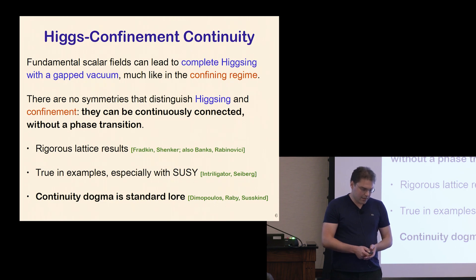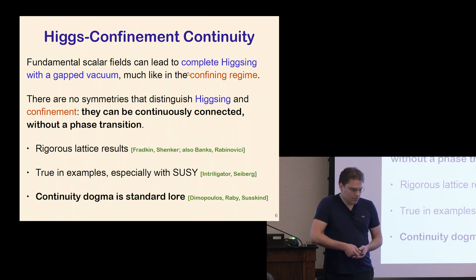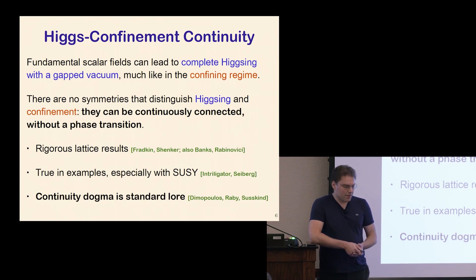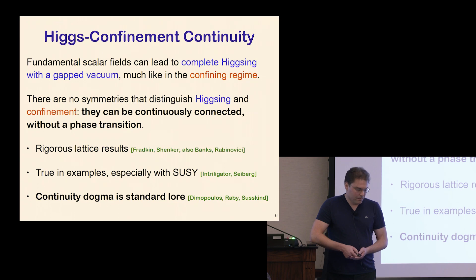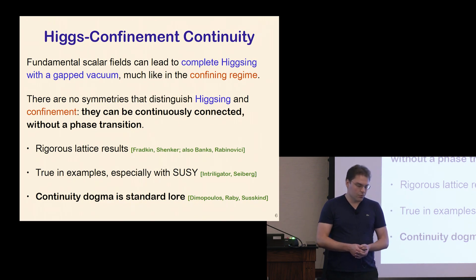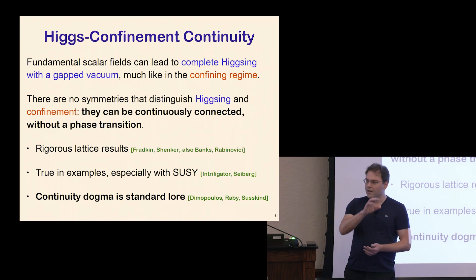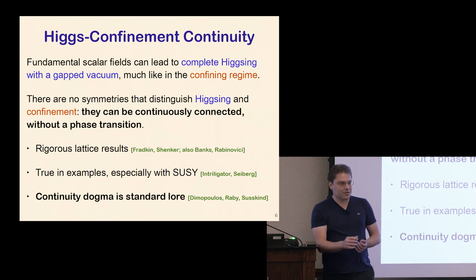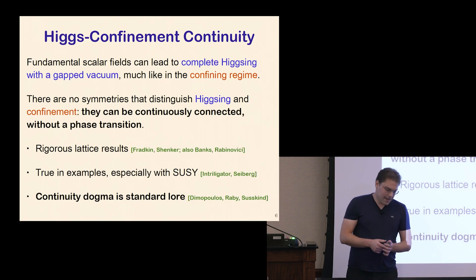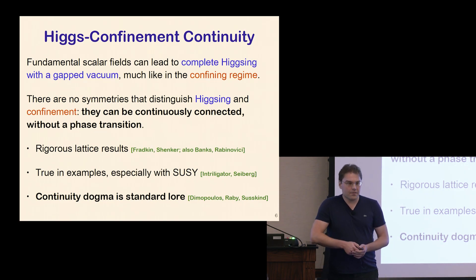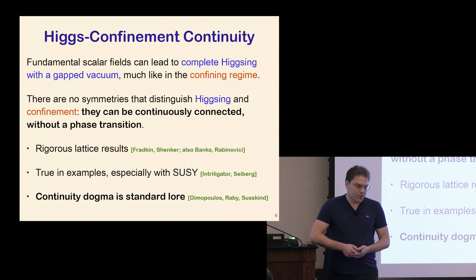This naturally leads to the idea that those two phases are not in fact distinct — that they can be continuously connected without a phase transition, and that there is one giant smooth Higgs confinement phase. This was made precise in the generalized orbit of Lenny Susskind. The most rigorous results come from rigorous lattice inequalities, for example the results of Fradkin and Shenker, and also of Banks and Rabinovici, who showed explicitly in certain lattice models that there is a single Higgs confinement phase without a transition.